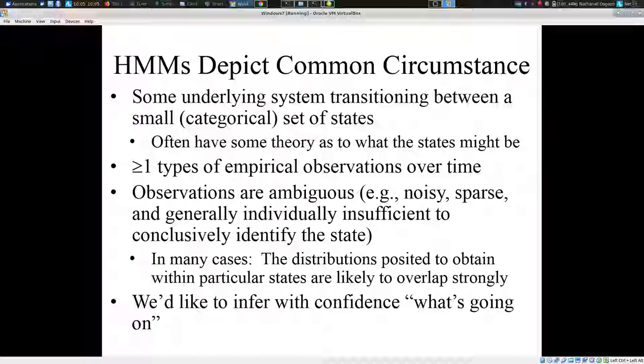Maybe we have blood glucose readings — spot readings at random times, not fasting ones — with a great deal of uncertainty. Maybe we have multiple types of observations: accelerometer data but also gyroscope data that might give clues as to my sitting status. Or trying to figure out whether the phone's screen is on or off, we have data about when the screen turns on or off, and Ethica is running. We also have battery records indicating whether Ethica is recording right now, or whether the app has been evicted from memory.